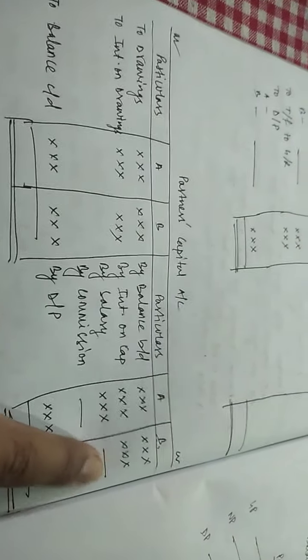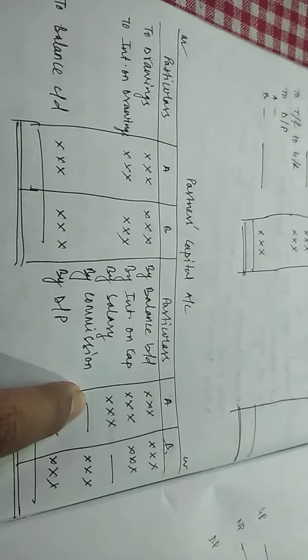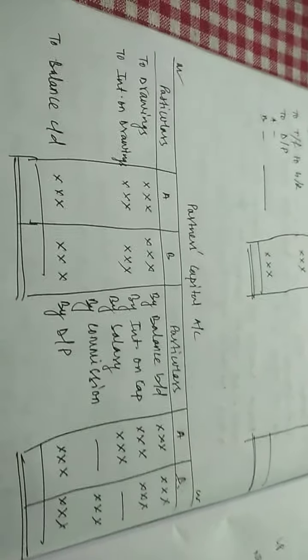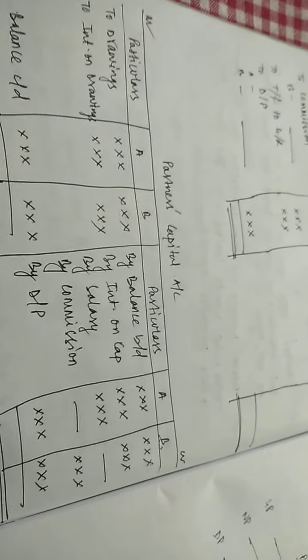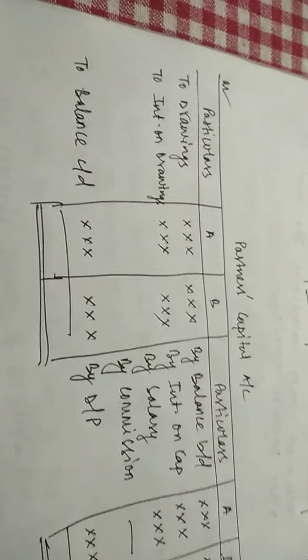Salary was being provided to A only and not to B. Commission to only B, not to A. Divisible profit to both, and interest on capital to both. All the amounts have appeared here. One important thing to note: all the items from the profit and loss appropriation account have been transferred here except transfer to general reserve, since the general reserve transfer was not made to any partner's capital account but to the account of reserve — so it will not appear here. On the debit side, we have drawings and interest on drawings both. One thing to note here is that on the P&L appropriation account, we had only...